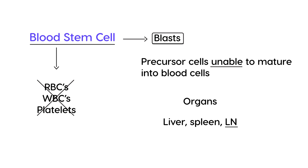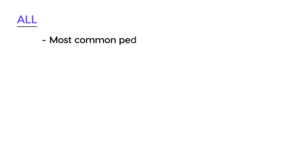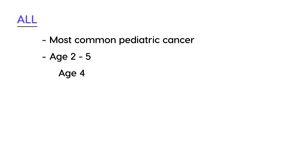Before getting into symptoms, it's important to note that ALL is the most common pediatric cancer. The average peak incidence is between ages 2 to 5, with age 4 being the most common — both on licensing exams and in the real world.